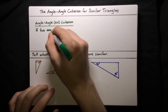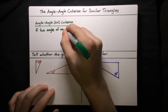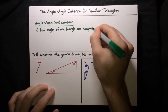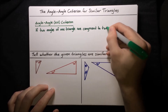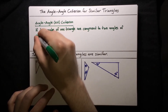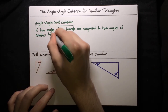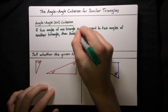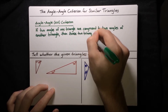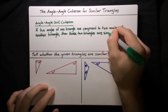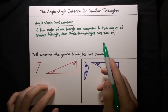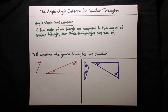The angle-angle criterion goes like this: if two angles of one triangle are congruent to two angles of another triangle, then these two triangles are similar. So basically, as long as we can find two pairs of congruent angles between two triangles, we know that the two triangles are similar — meaning not only are all the corresponding angles congruent, but also the lengths of corresponding sides have the same ratio.